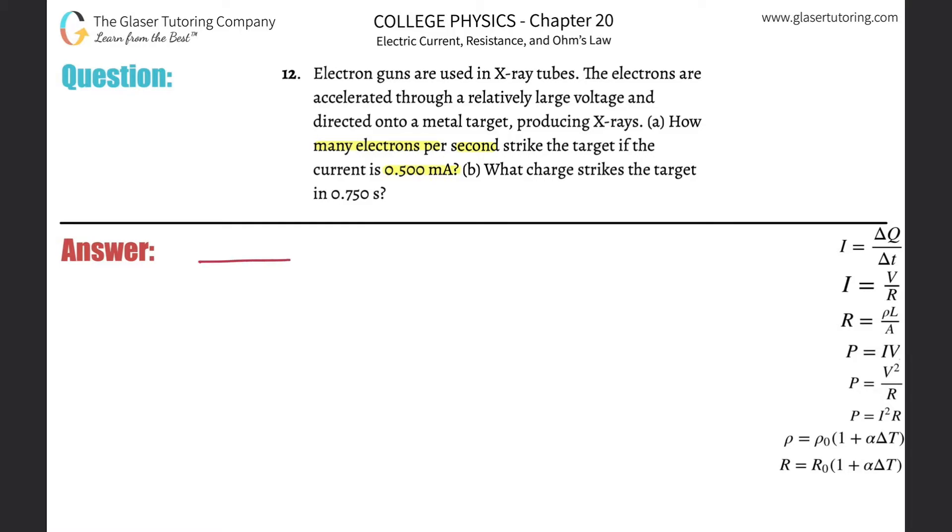So we know that the current flowing through this particular gun is going to be 0.500 milliamps. We know we need this in amps anyway, so just do the conversion. So it's 0.5, just multiply that value times 10 to the minus 3. That's the value in amps.